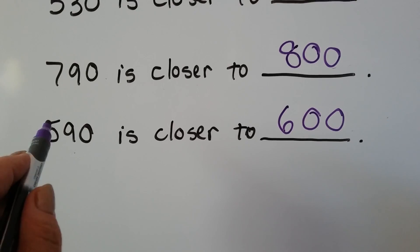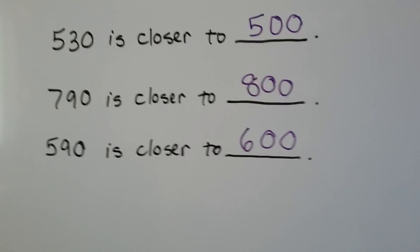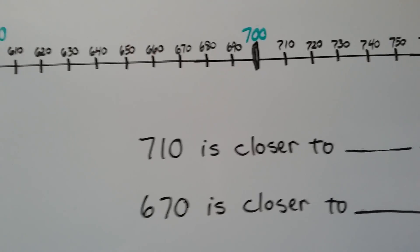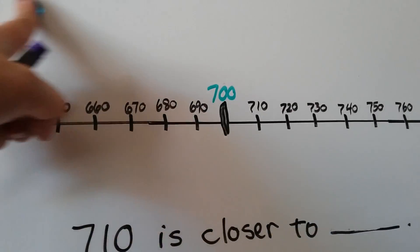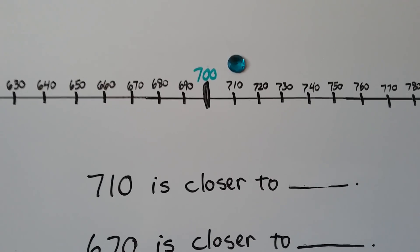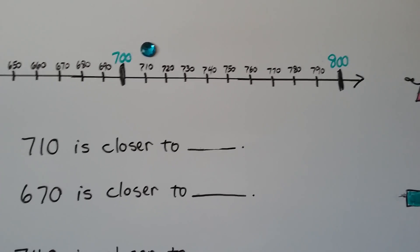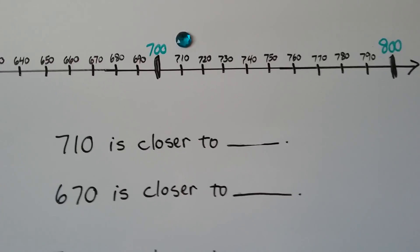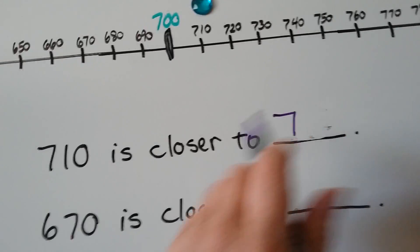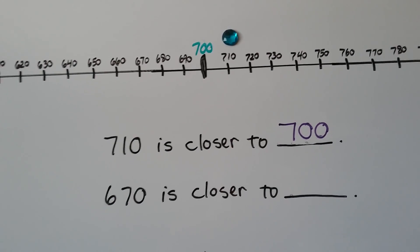That 90 is making it go almost to the next 100 — it's making it go to 600. Now we have 710. Let's look at where 710 is on our number line — it's right here. We can see it's really, really close to the 700. It's in between the 700 and 800, but very close to the 700. If we round 710 to the closest 100, it would be 700.